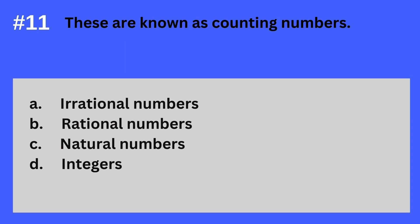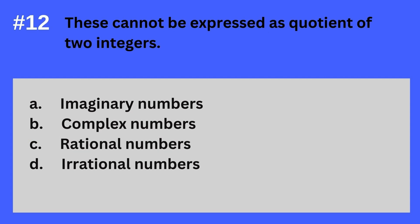Question 11. These are known as counting numbers. A. Irrational numbers. B. Rational numbers. C. Natural numbers. D. Integers. The answer? It's C. Natural numbers. These are known as counting numbers — Natural numbers.